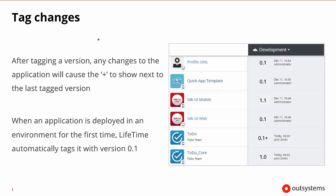After tagging a version, any subsequent changes will show that plus sign again. Something else to notice is that if you deploy an application for the first time in a particular environment, Lifetime will automatically tag it as a 0.1 version. For example, Silk UI Web was probably recently deployed for the very first time as it's 0.1. And here ToDo was deployed as 0.1, and then someone made a change, where the plus shows that it isn't the same version that was originally tagged.